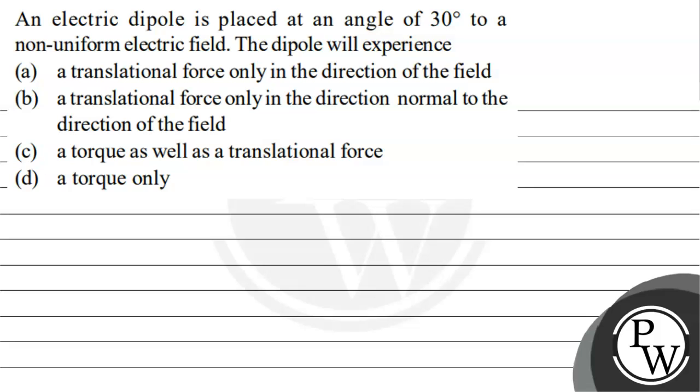Hello, let's see the question. The question says: An electric dipole is placed at an angle of 30 degrees to a non-uniform electric field. The dipole will experience option A, a translational force only in the direction of the field.